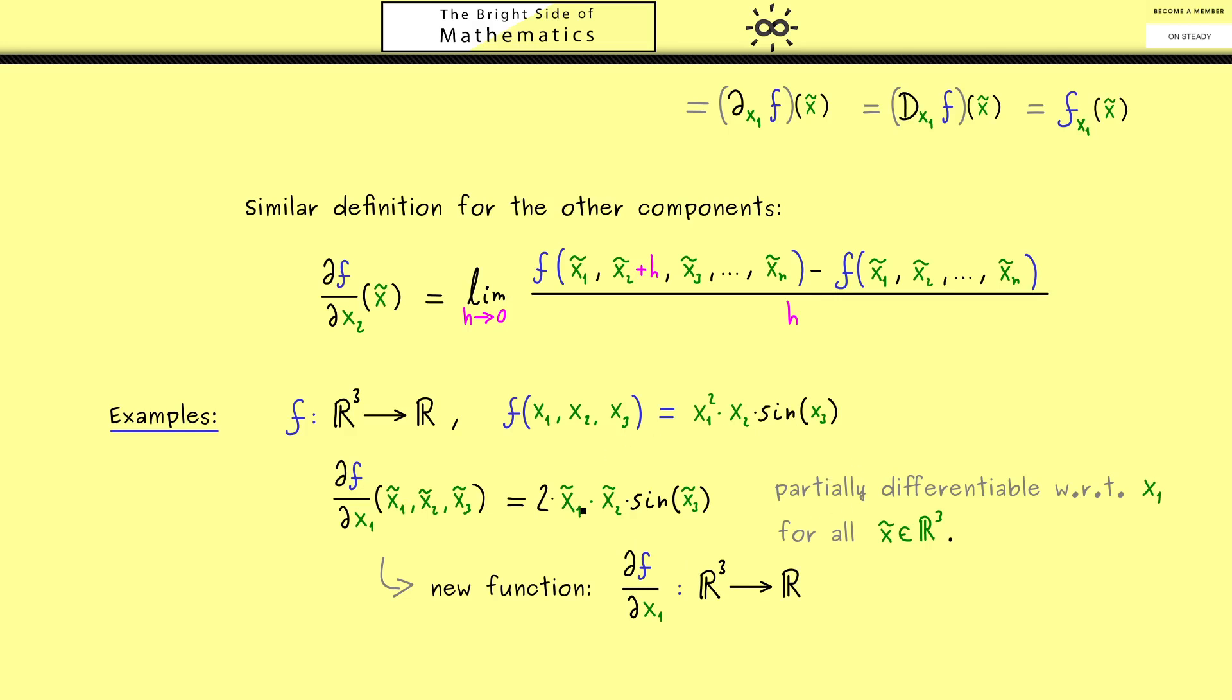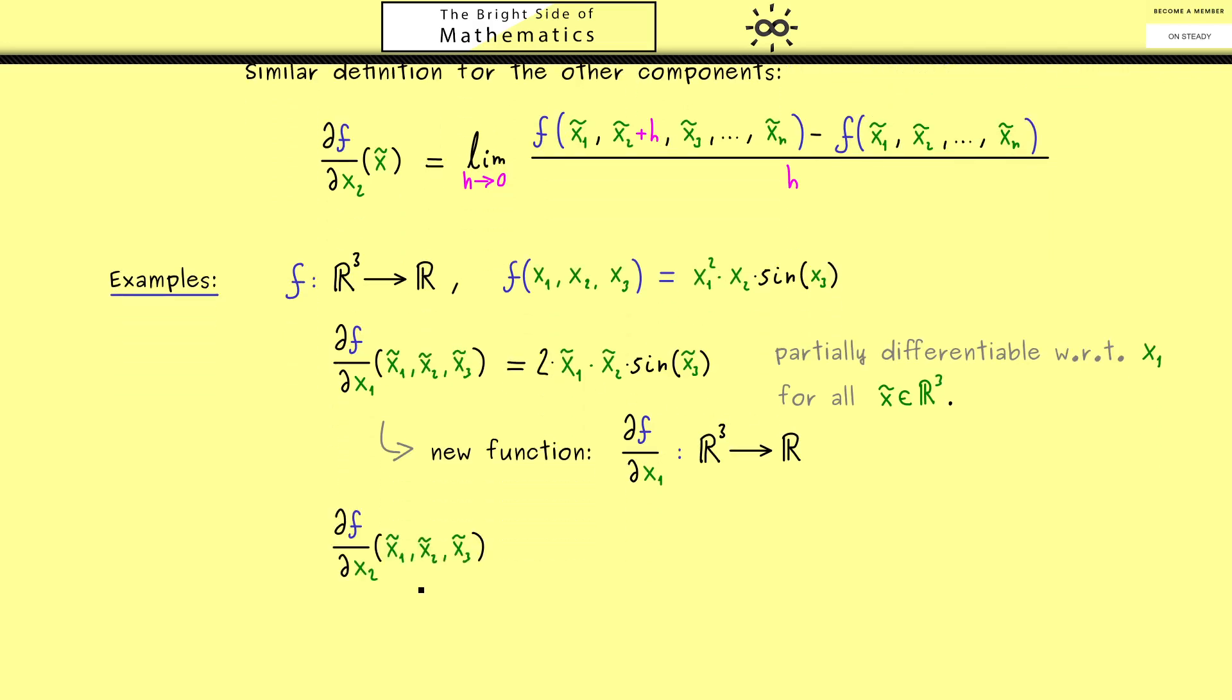Okay, then for the rest of the video, let's consider the partial derivatives with respect to x₂ and x₃. Now with respect to x₂, you see we have a linear function where the constant is x₁² times sine x₃. And there, of course, you know the derivative is just this constant then. However, because we put in x tilde as the point, we have tildes above the components as before. So you see, the whole thing here is not complicated at all if you already know how to calculate ordinary derivatives.